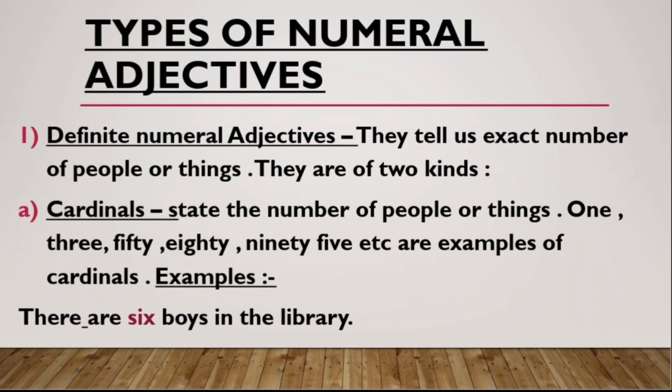A definite numeral adjective tells the exact number of people or things, and it is divided into two parts. The first part is cardinals, which tell the exact number — for example, 'six lipsticks.' How many lipsticks? Six lipsticks. Something you can literally count. That was all about cardinals. Now let's understand ordinals.